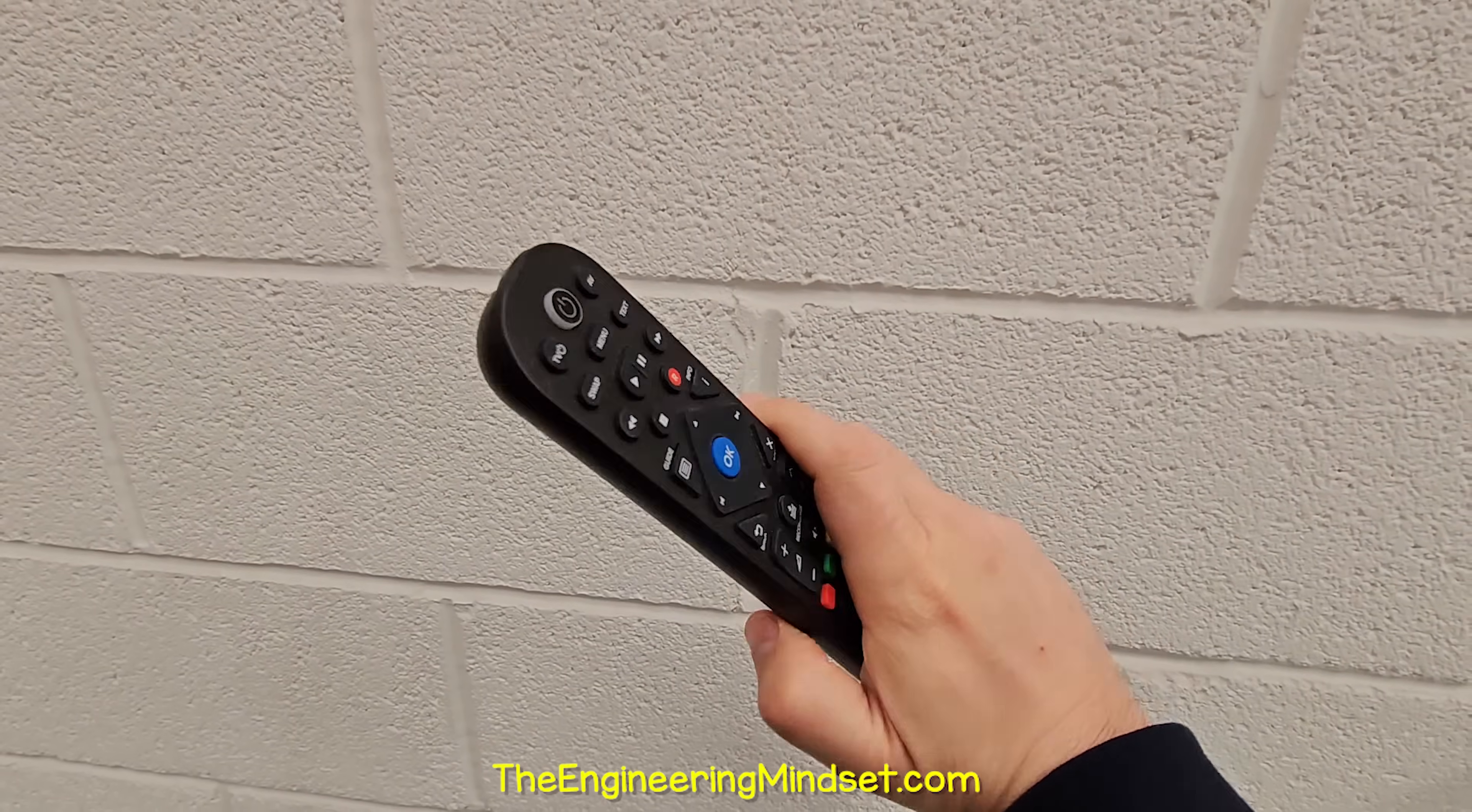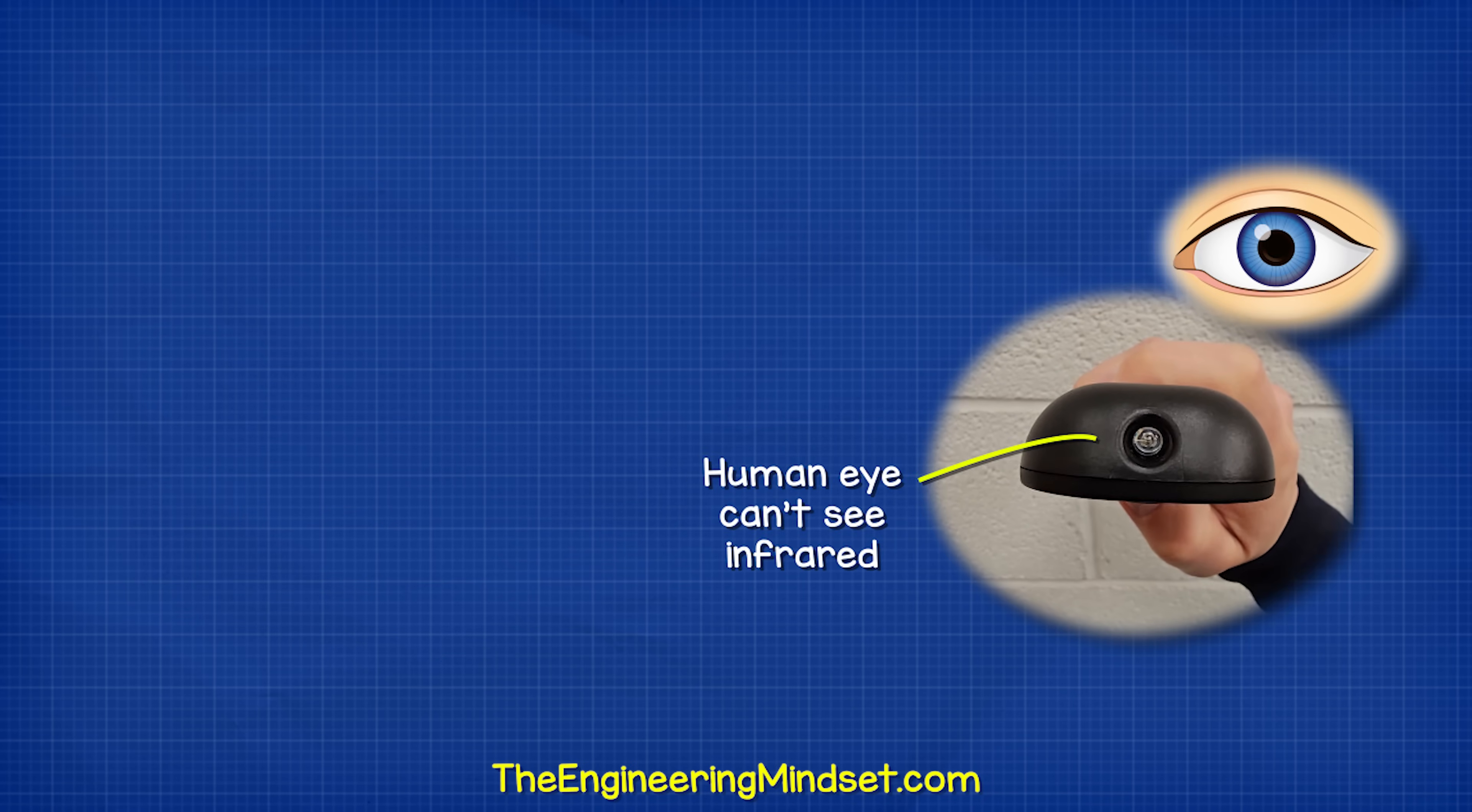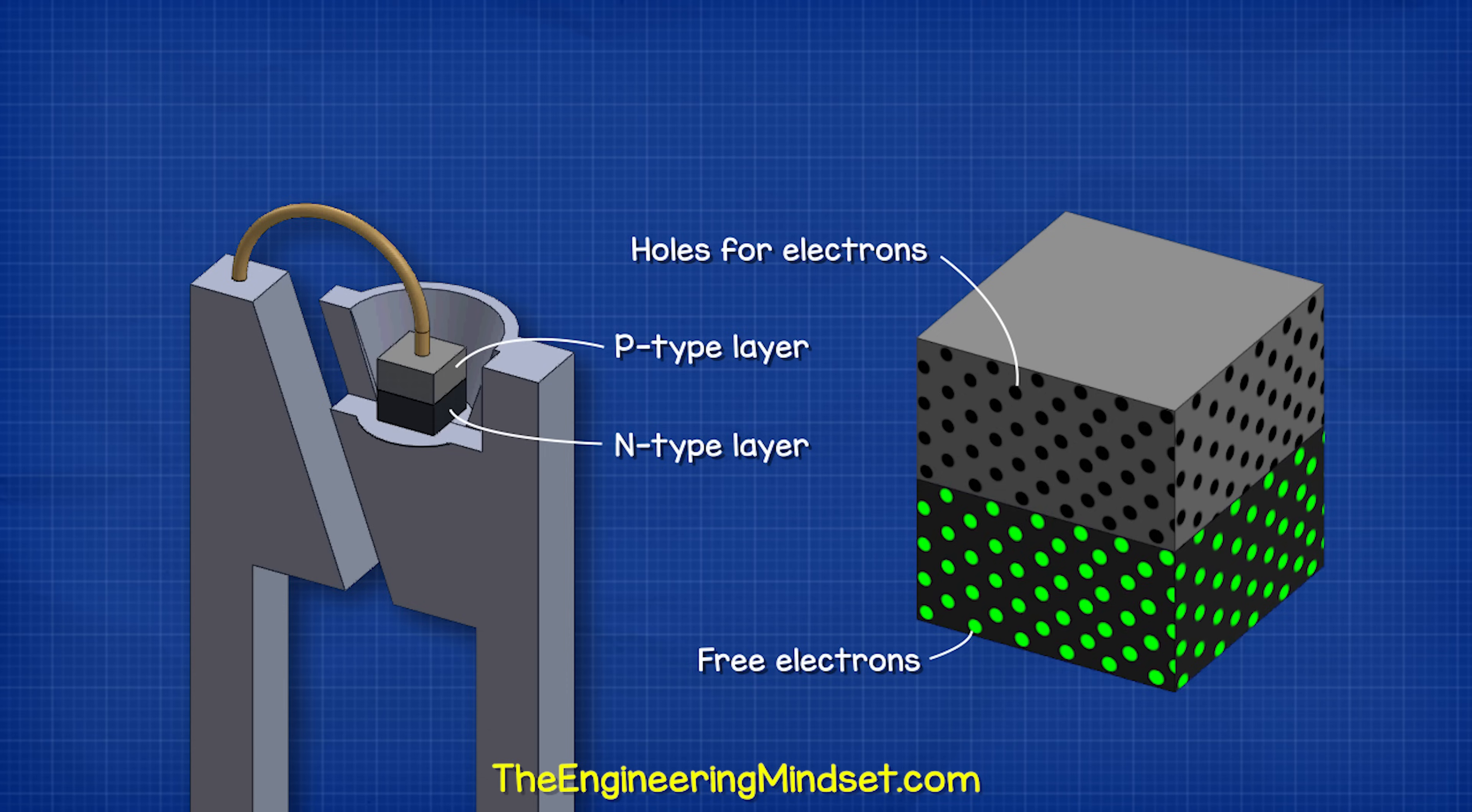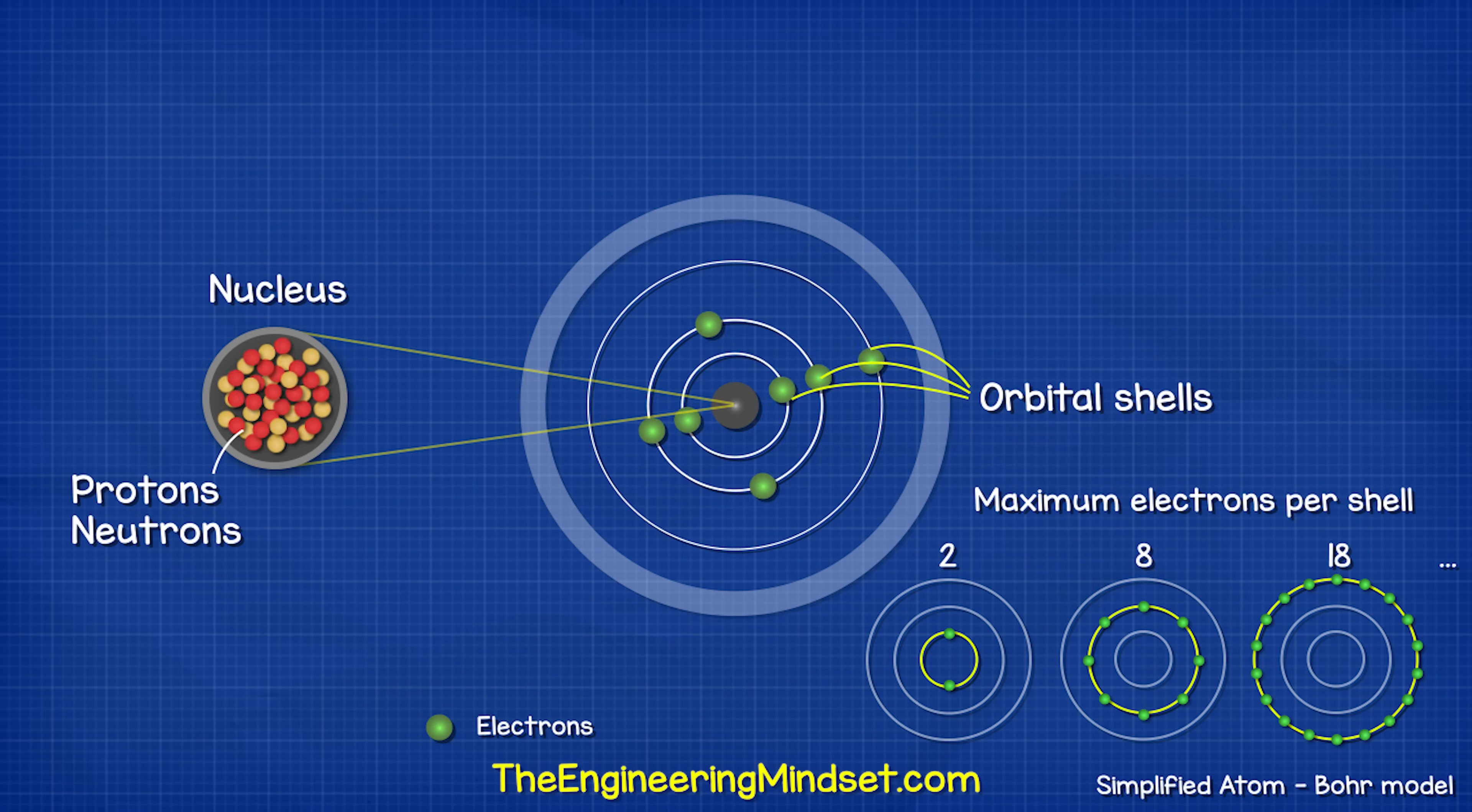Have you ever noticed there's an LED in your TV remote? This emits infrared light. The photon has a wavelength typically around 940 nanometers, so humans can't see it. However, you can see it on the camera of your phone. Inside the semiconductor, we just have electrons combining with holes and releasing photons in the process. We will learn how it works in more detail later on in this video.